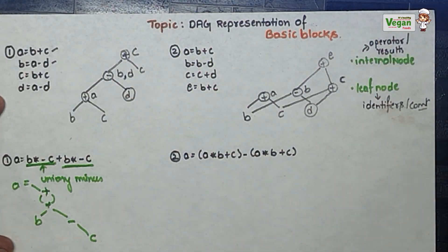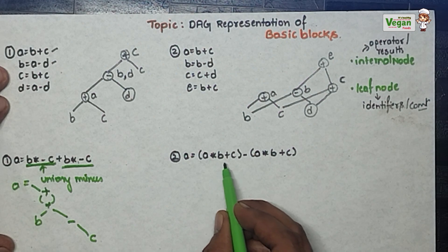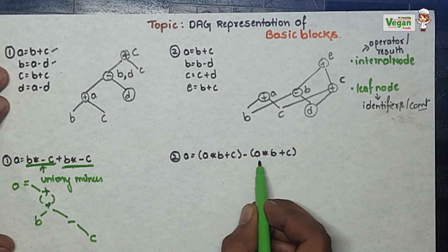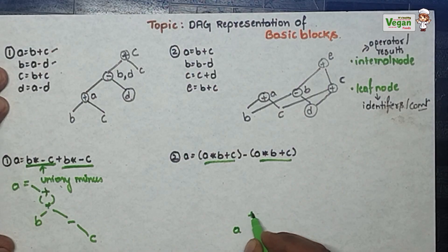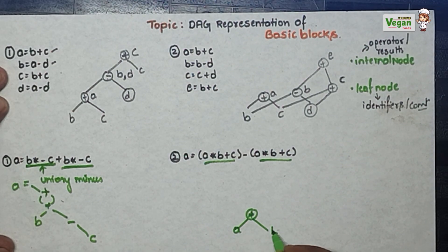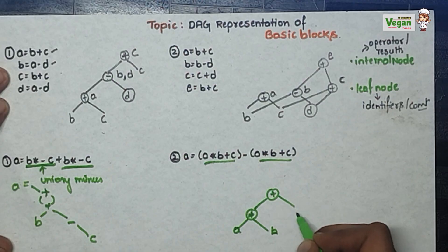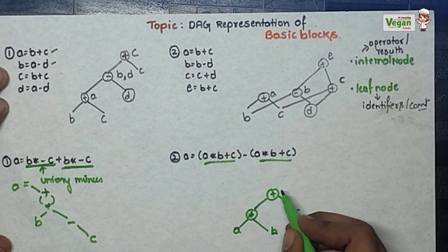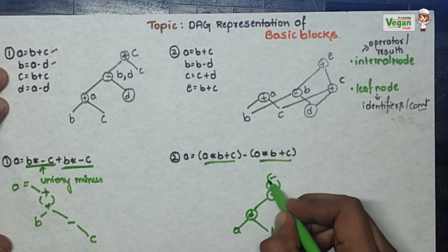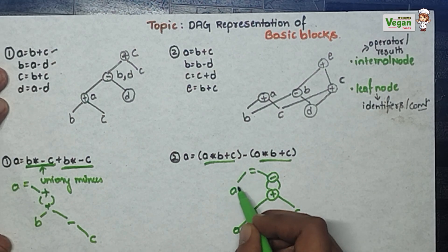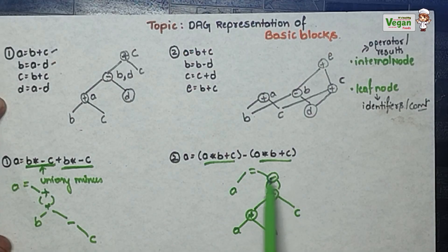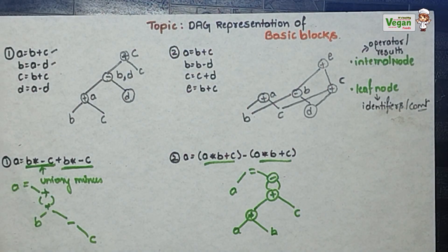Now the second question: A star B plus C minus A star B plus C — both sides are the same so we write it once. First represent A star B, then plus C. Since A star B plus C appears again I give a loop, with minus in between them. This whole expression must be equated to A. So A equals all expression on the right-hand side. These are the two possible cases under the DAG representation of basic blocks.